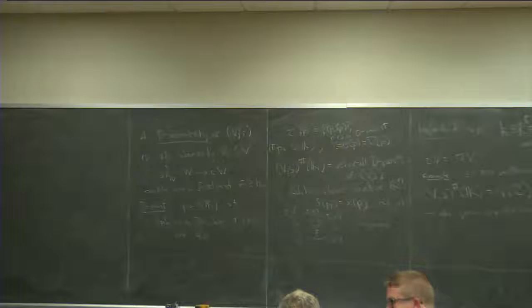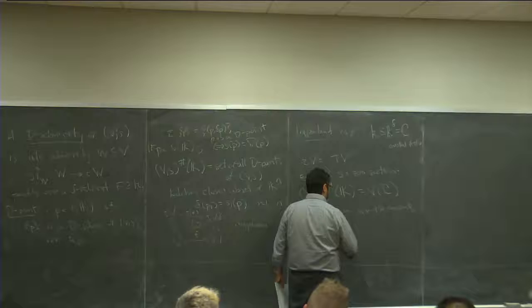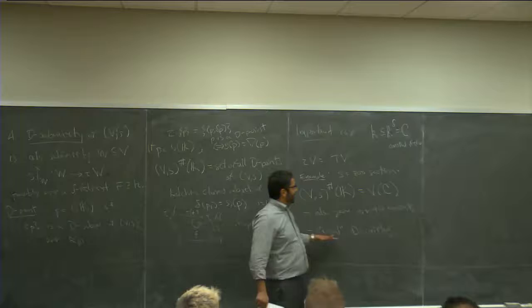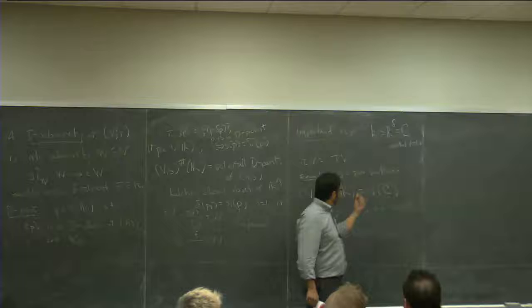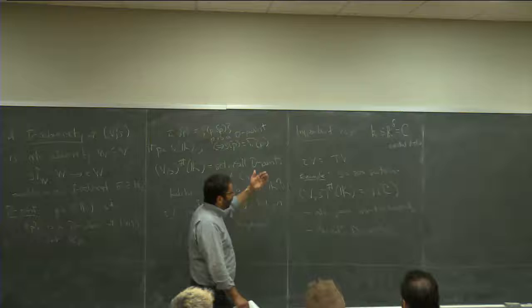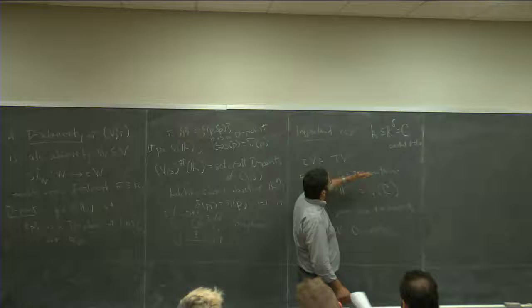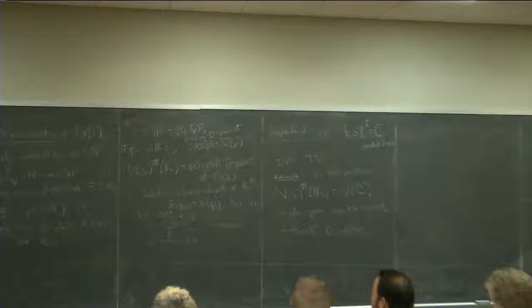I'll call the algebraic-geometric case 'trivial' — a totally different meaning than Dave's, but algebraic geometry in this perspective is somehow trivial: there's no D-structure. By a trivial D-variety, I mean a variety defined over something in the constants with the section being the zero section. If you work over the constants but allow other sections, then you're in an interesting situation. If you work over the constants with the zero section, you're not doing anything other than algebraic geometry.